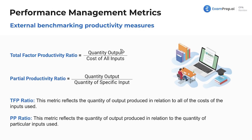For example, if we are making trucks, the total factor productivity ratio is all of what was produced compared to the cost of all the parts of the truck, whereas the partial productivity ratio might be all the trucks produced compared to just the rubber used for the tires, or just the metal used for the trucks — just a specific input.